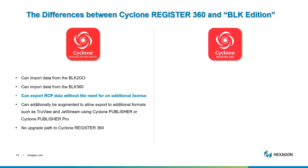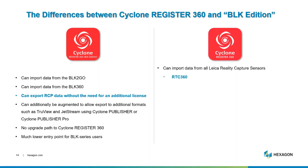If you want to open the floodgates to all other data types, then Reg360 is your starting point. It can import data from all Leica and reality capture sensors, such as the RTC, the BLK series, and the ScanStation P series and C series, which many of you on this call are using.